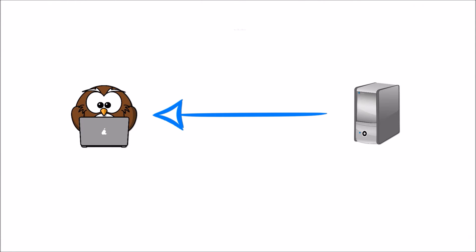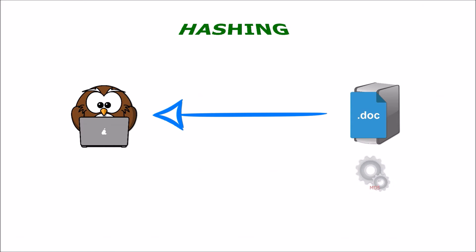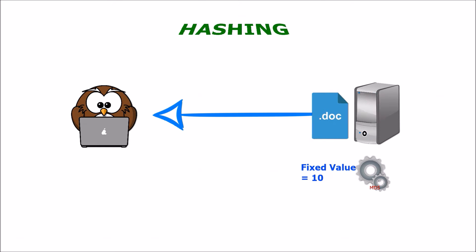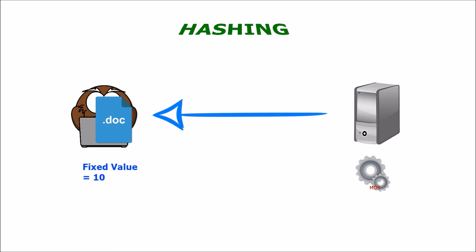The first method is called hashing, and it was created as a solution to the man-in-the-middle problem. Hashing means taking data, for example a text document, and transforming it by a hashing algorithm into a fixed value. This value will change dramatically if any part of the document was altered at any time during transmission.